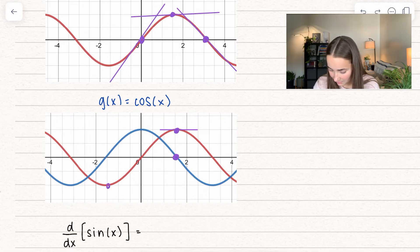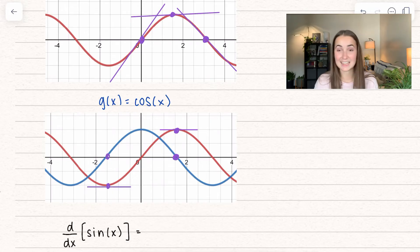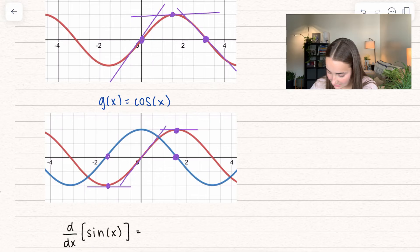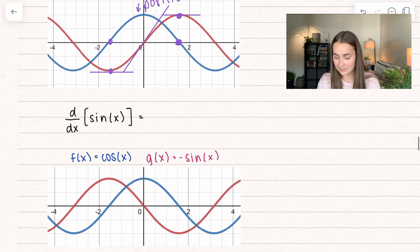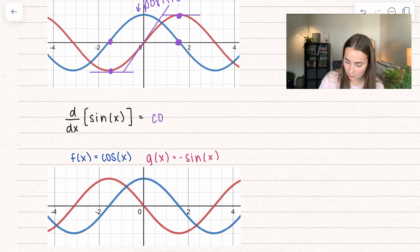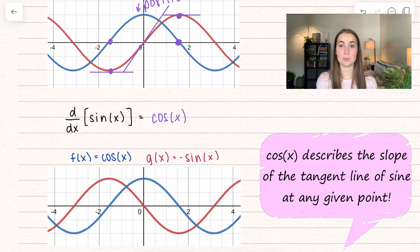Right when we have a slope of 0, cosine of x is actually at 0. When we have an increasing tangent line, our cosine of x is positive. So that tells us that the derivative of sine of x is actually equal to cosine of x. Cosine of x describes the slope of the tangent line of sine at any given point.